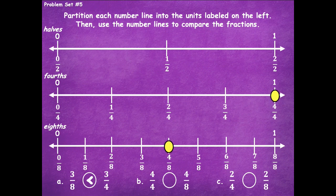For part b, four fourths versus four eighths: four fourths is here and four eighths is here on the number line. Four fourths is a greater distance from zero, so four fourths is greater than four eighths.